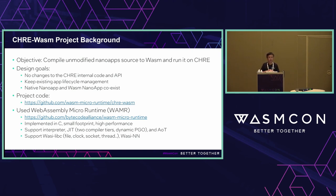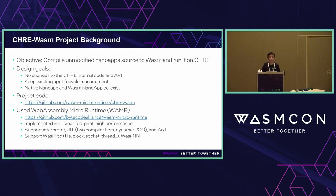WAMR is implemented in C with a very small footprint and high performance, making it suitable for resource-constrained environments like CHRE. It supports multiple execution modes: interpreter, just-in-time compiler, or ahead-of-time compiler, and also supports neural networks. The CHRE environment typically has only a few hundred KB to a maximum of two megabytes of memory available, which is why WAMR's small footprint is critical.